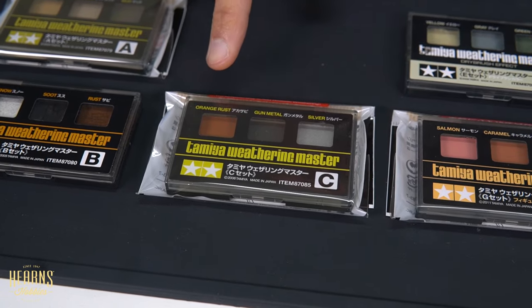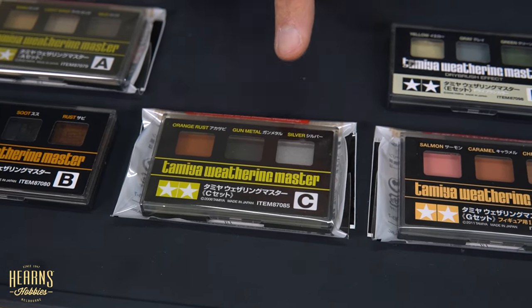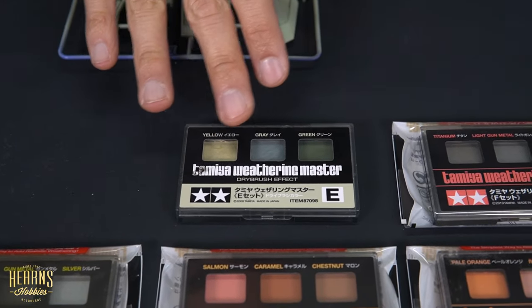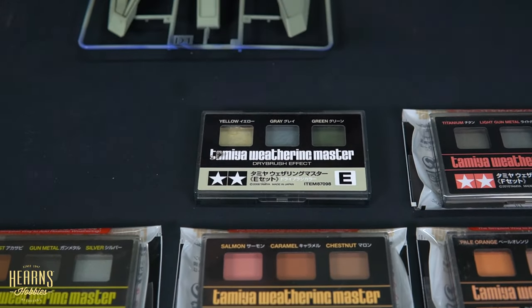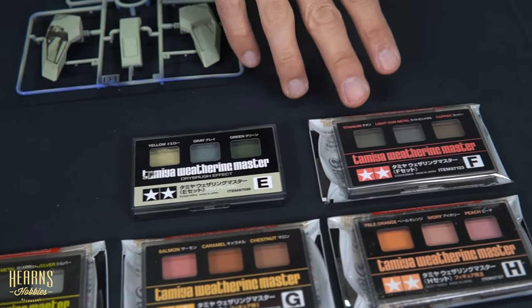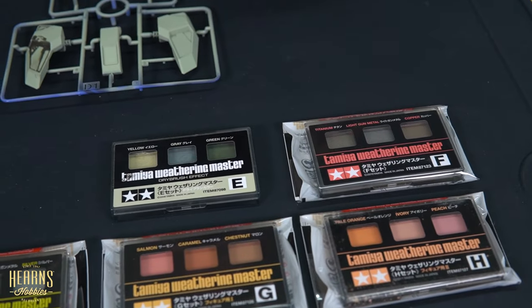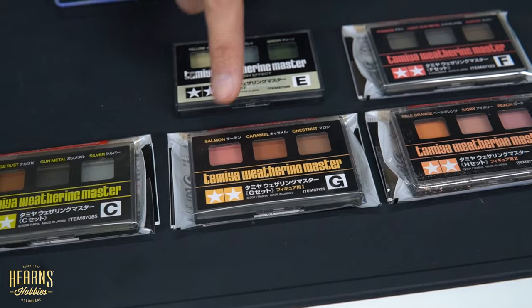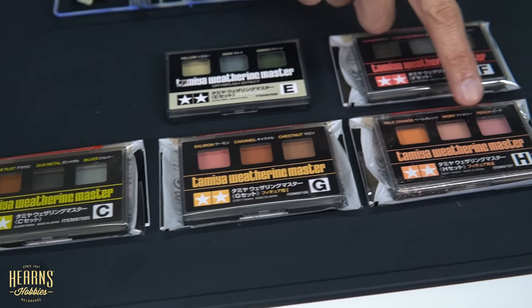C has the rust, gunmetal, and silver. The E set is for dry brushing with a variety of muted tones. F has the metallic weatherings - titanium, gunmetal, and copper. With G and H, these are very much for toning figures with different flesh tones.